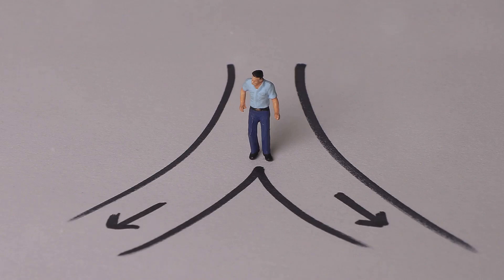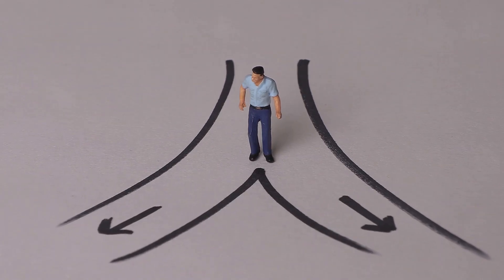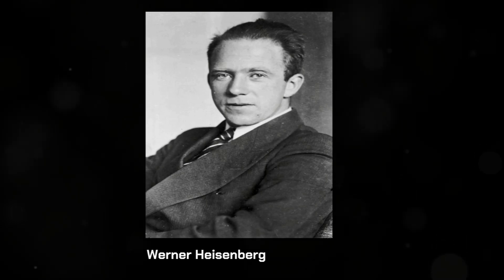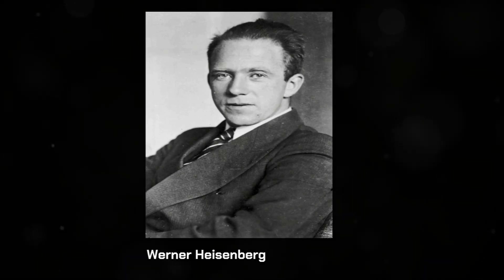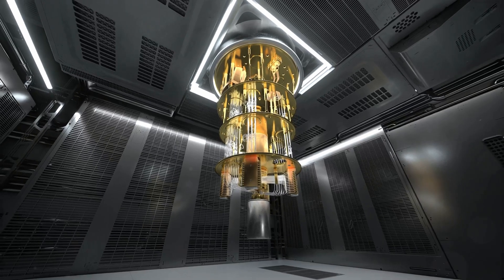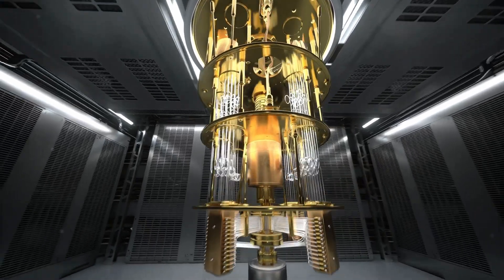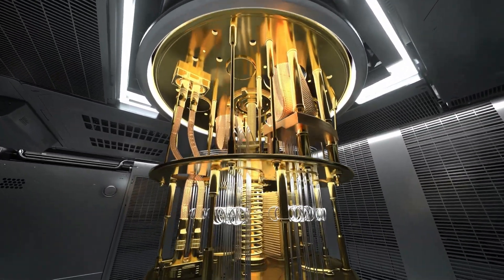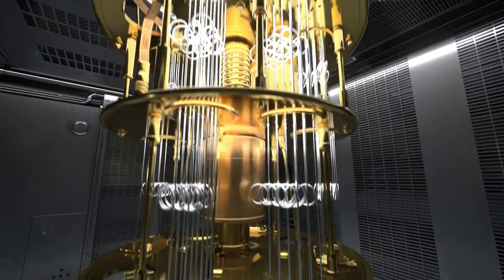This act of picking, of forcing a quantum system to choose a specific state, has significant consequences, as German physicist Werner Heisenberg in 1927 demonstrated. Now if measuring quantum systems changes them so dramatically, does that mean there are things about the quantum world we can never truly know?